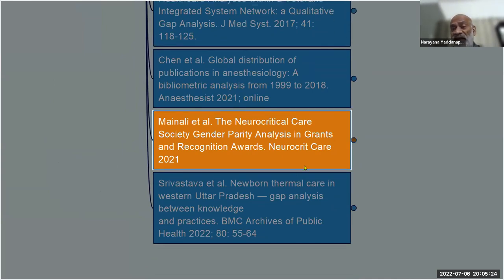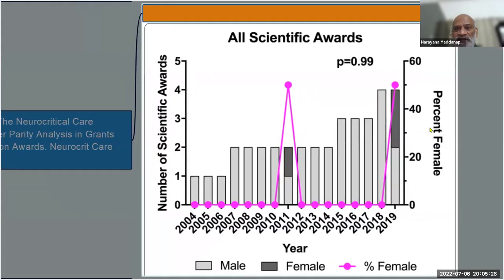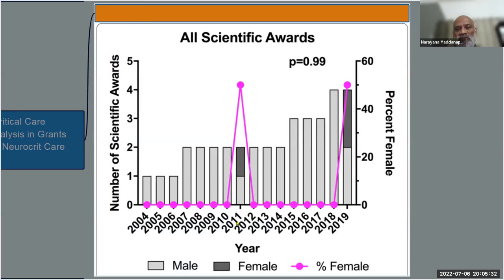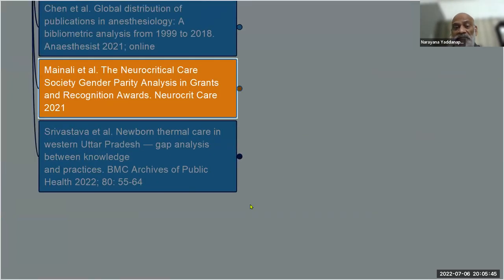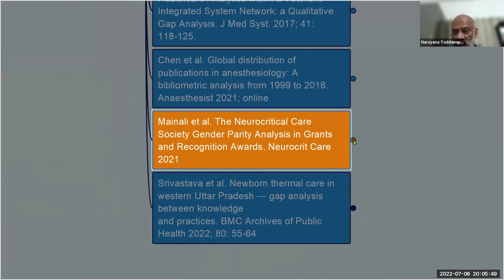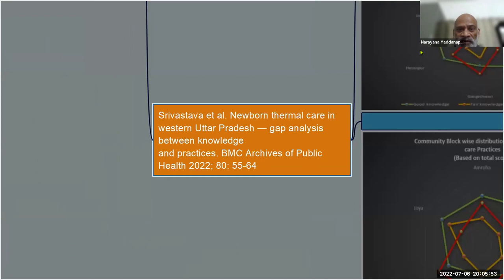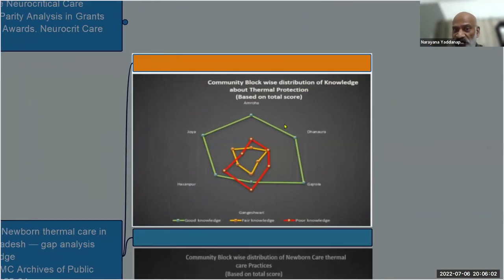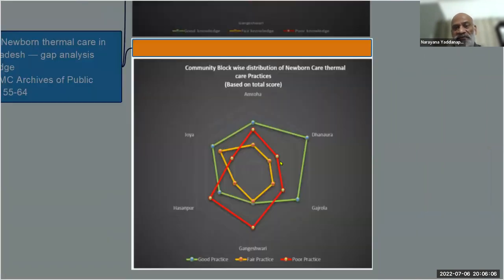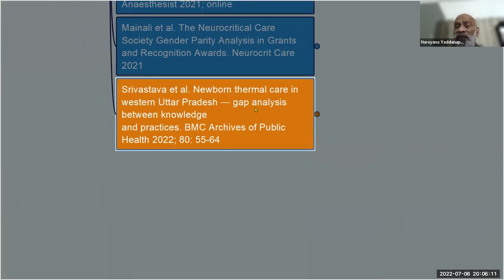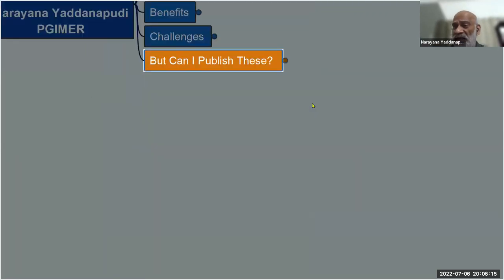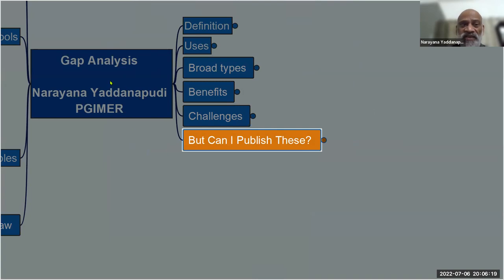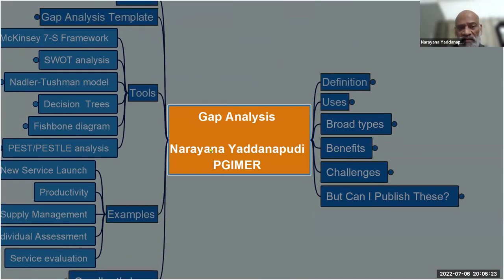Neurocritical care gender parity analysis of grants and recognition of awards found that women received awards only twice — once in 2011 and once in 2019 — something we wouldn't even think about until these things were published. Srivastava et al. studied newborn thermal care in western Uttar Pradesh, actually putting feet on the road to assess knowledge about newborn thermal care, practices, and the gap between them. This type of research is very rewarding and can be published in major international journals.